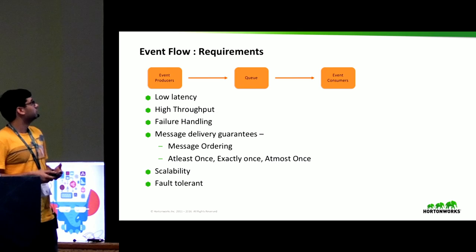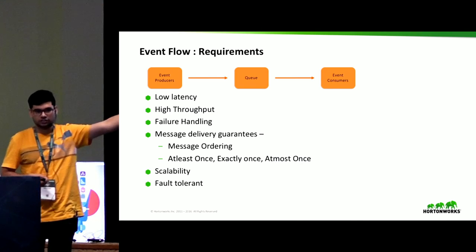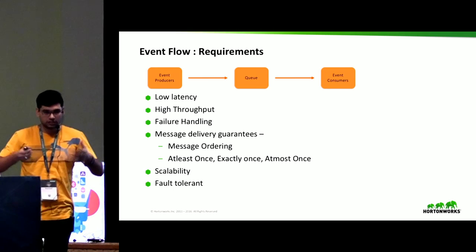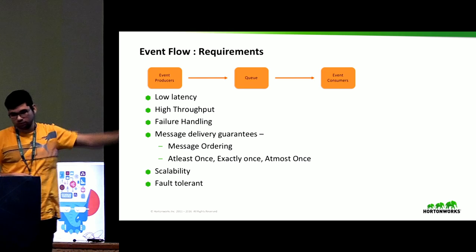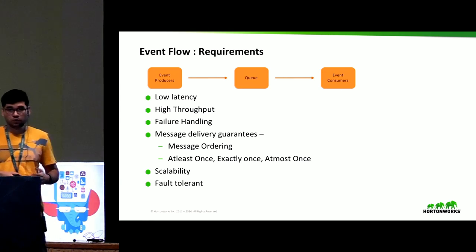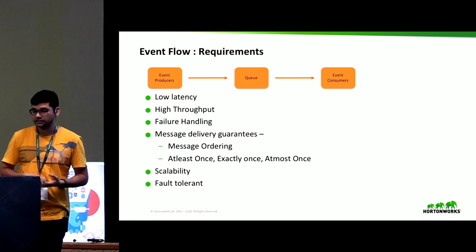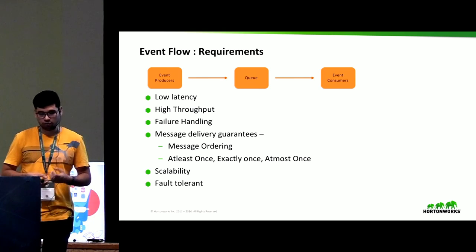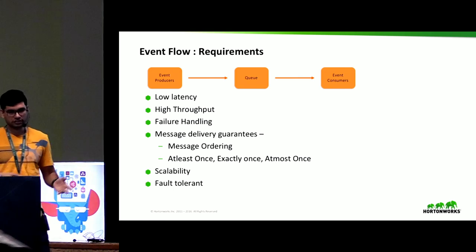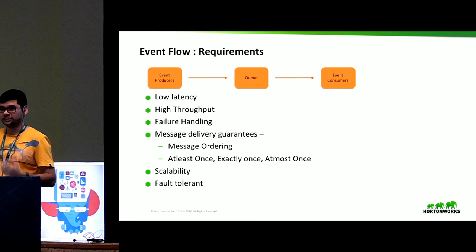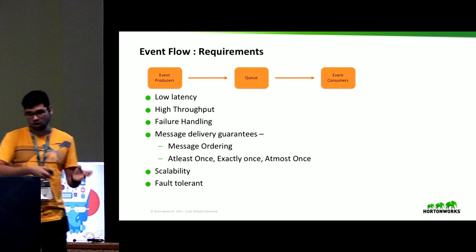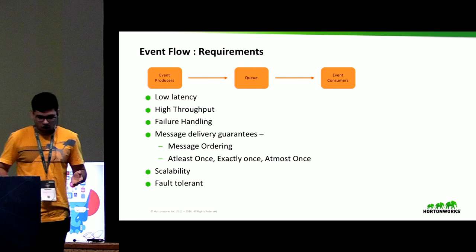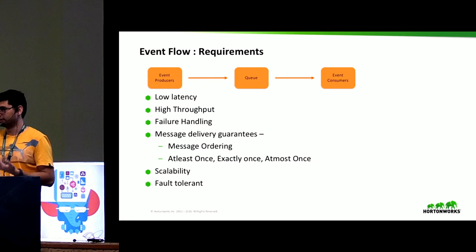A general event flow looks something like this: you have a set of producers and a set of consumers, and you need a queuing message broker in between to facilitate this event flow. The requirements for this solution are low latency and high throughput. It should be fault tolerant — if there are any failures at producers or consumers, it should handle that. It should provide message delivery guarantees like ordering of messages, and delivery guarantees like at least once, exactly once, or at most once, which vary by use case.